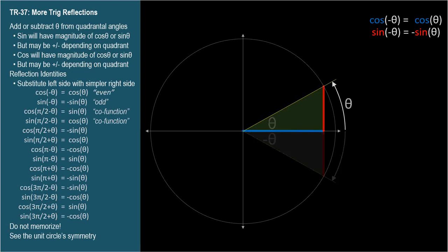We'll identify the angle in terms of theta and then state the angle's cosine and sine in terms of cosine theta and sine theta, just like we did for negative theta. For the next triangle, we'll go to the next axis — the positive y-axis.